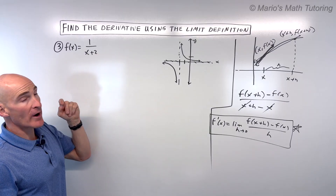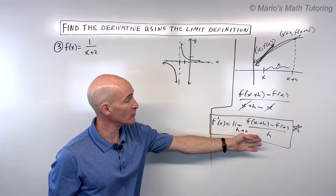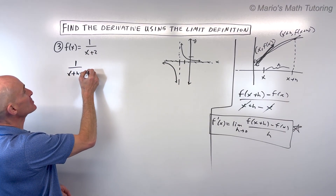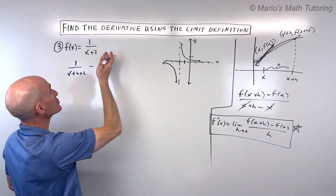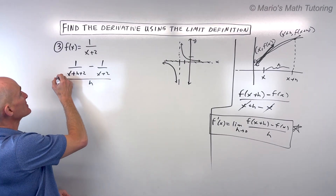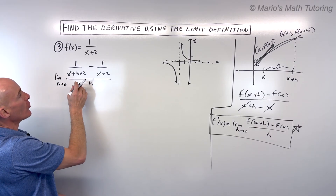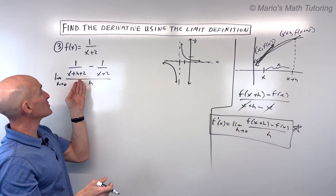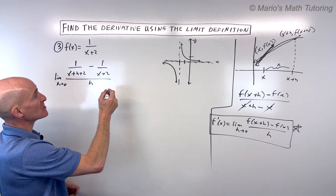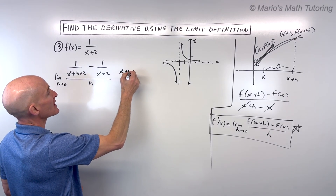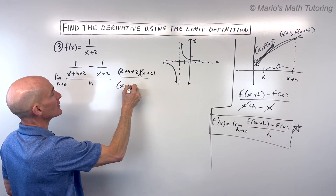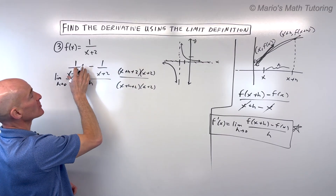Now one other different type of problem: f of x equals 1 over x plus 2. Using the limit definition for the derivative, we start by putting x plus h in for x. So this looks like: 1 over x plus h plus 2, minus f of x, which is 1 over x plus 2, all divided by h. Remember, this is the limit as h approaches 0, but we want to simplify first. If we try to put 0 in right now, we get 0 over 0 — the indeterminate form. So let's clear this complex fraction by multiplying by the lowest common denominator, which is x plus h plus 2 times x plus 2 — doing this to both numerator and denominator.